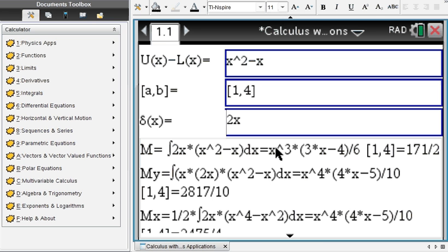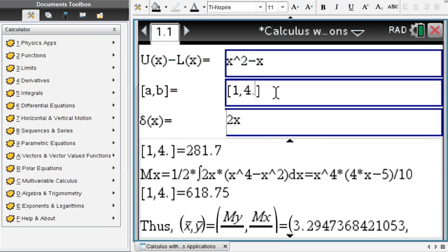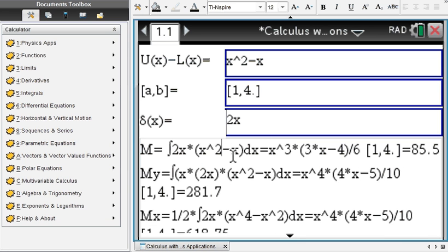That's the integral, the anti-derivative. The integral from one to four gives you 171 over 2. Remember, if you want to have decimal answers, you just have to enter decimal numbers and your output will be in decimal format, but let's stick to exact format.